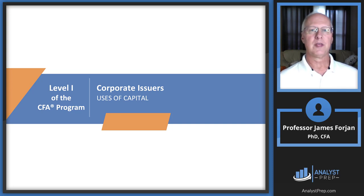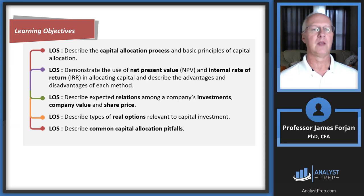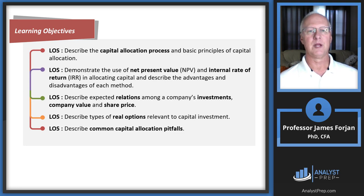Think of this reading, uses of capital, as the stuff that goes on on the left-hand side of the balance sheet. And the next reading, sources of capital, as stuff that goes on on the right-hand side of the balance sheet. There are just five learning outcome statements in this relatively short reading. Clearly the most important one is the second one: demonstrate the use of net present value and internal rate of return.